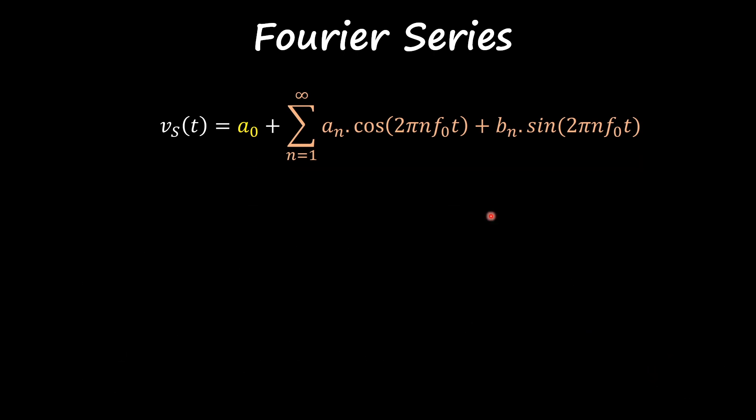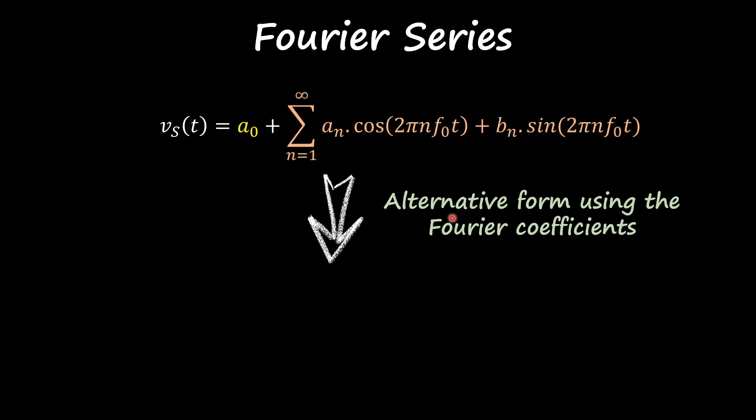There is an alternative way of representing this Fourier series. If I pick up the Fourier coefficients a_n and b_n and apply the square root of a_n squared plus b_n squared, I have what's called amplitude. If I do the arc tangent of b_n over a_n and multiply by minus one, I get the phase. We have what's called the alternative form for the Fourier series.